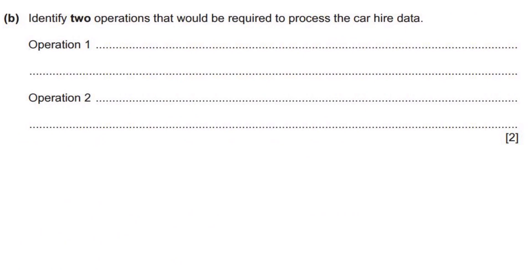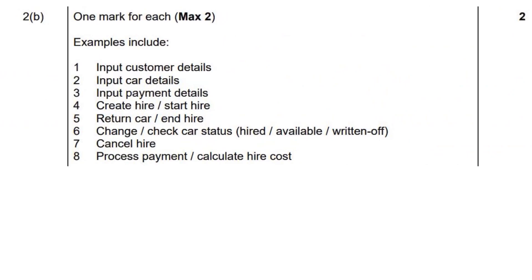Our next question: identify two operations that would be required to process the car hire data. You just need to think about a program that would do this and what things you need to do. Two very simple operations: input car details and input customer details. Some other examples of possible answers include input payment details, create a hire, return a hire — basically software that would deal with ending or creating a hire — one that allows us to look at the car status, cancel a hire, process payment, or calculate the cost of the hire.